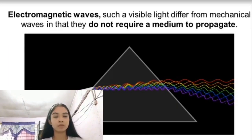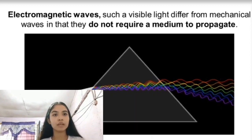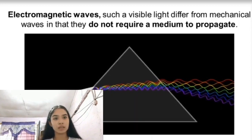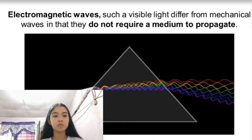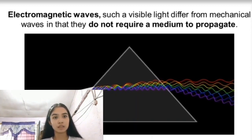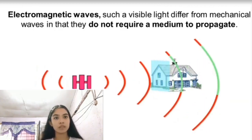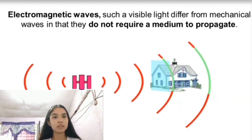Electromagnetic waves such as visible light differ from mechanical waves. They do not require a medium to propagate or to transfer energy. This means that electromagnetic waves can travel not only through air and solid materials, but also through a vacuum or space.